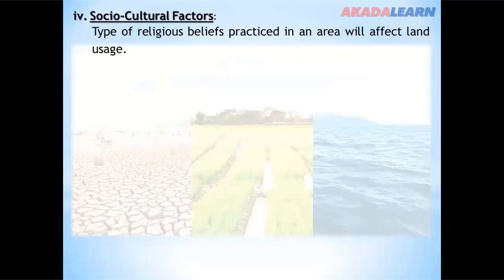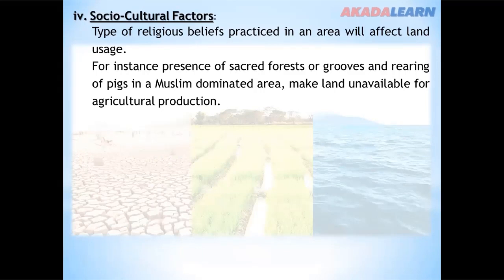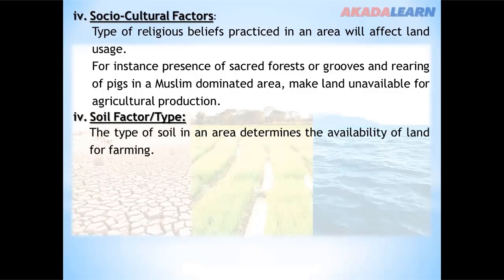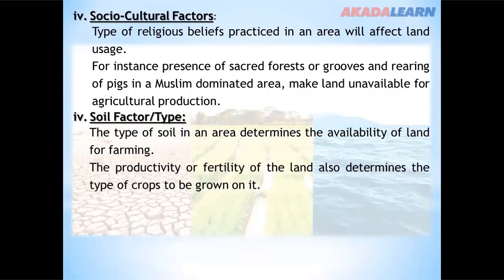Socio-cultural factors. Types of religions, beliefs and customs in an area will affect land usage. For instance, the presence of sacred forests and varying practices in Muslim-dominated areas can limit land availability for agricultural production. We also have the soil type or soil factor. The type of soil in an area determines the availability of land for farming, and the productivity or fertility of the land also determines the type of crops to be grown.